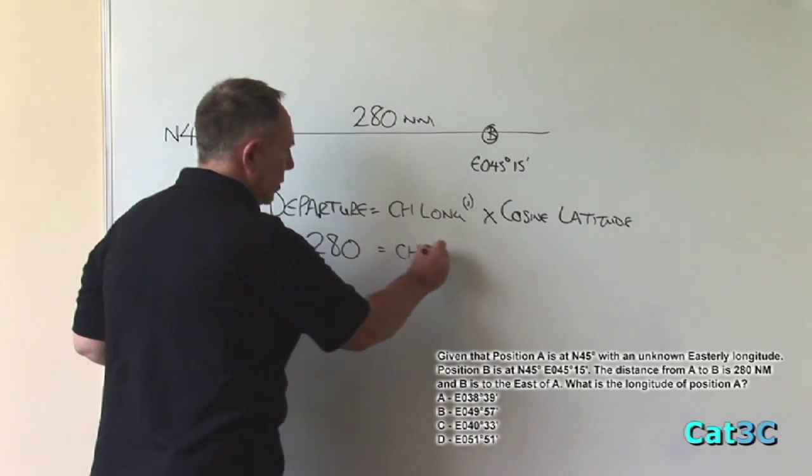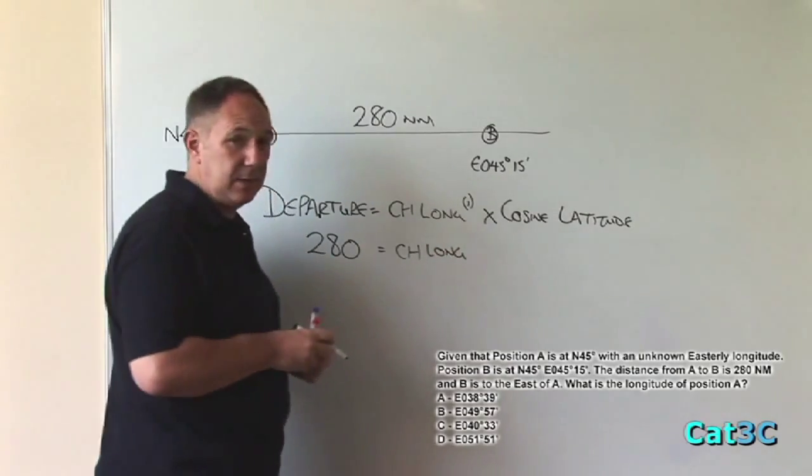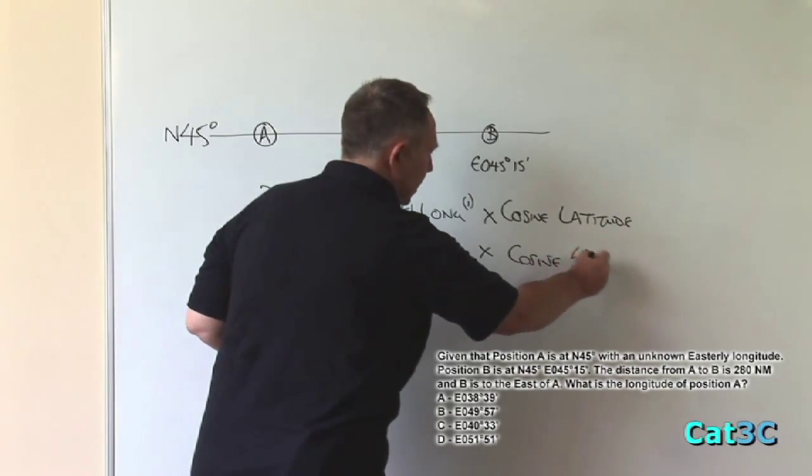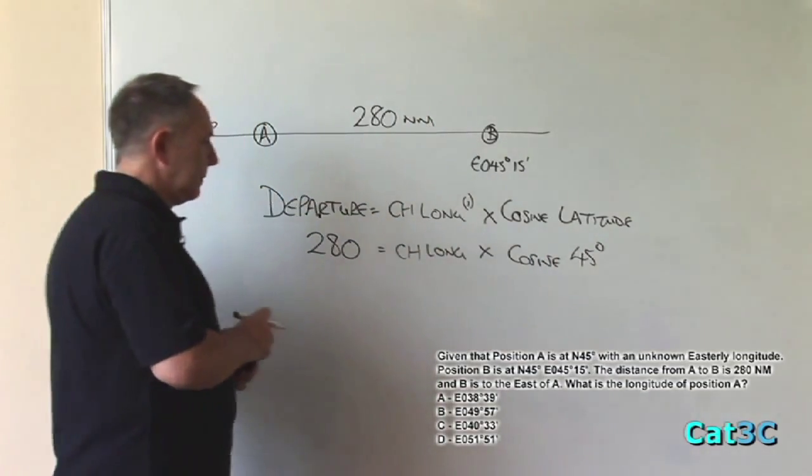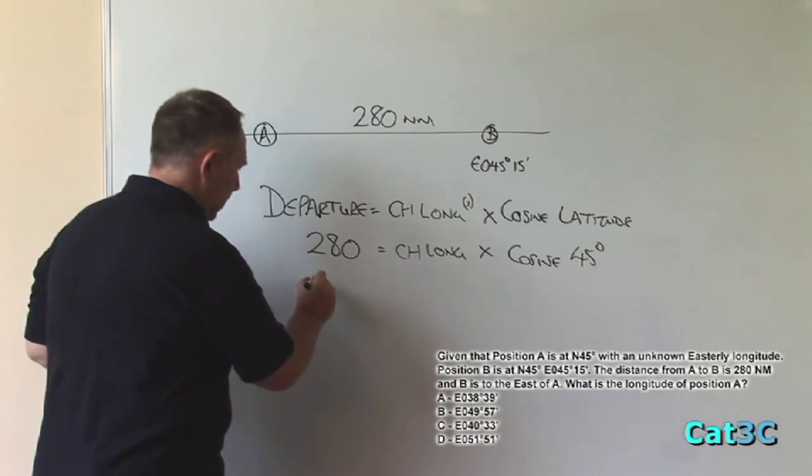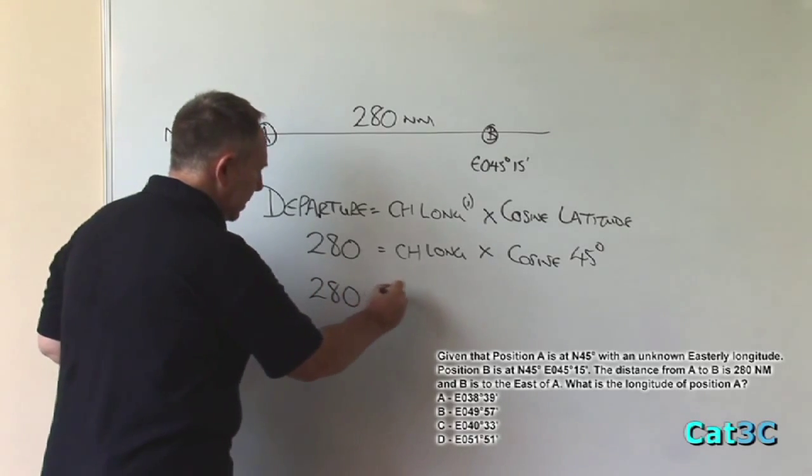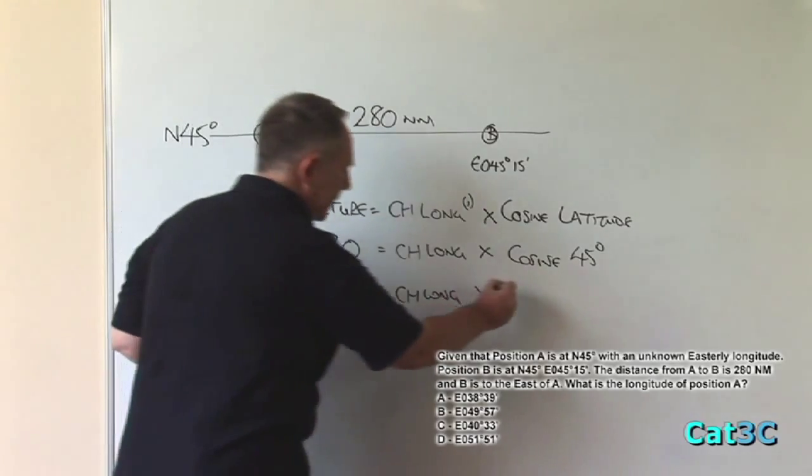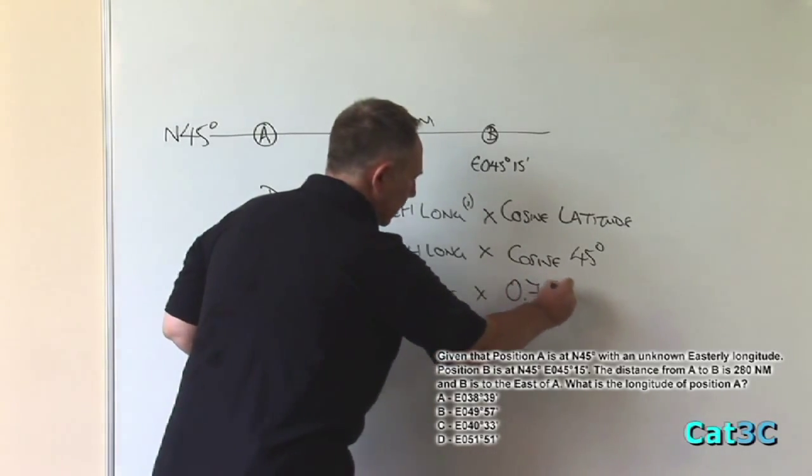The change of longitude is what we're trying to find. And the latitude of which we need the cosine is a constant of 45 degrees. Completing the next line, the cosine of 45 is 0.707.